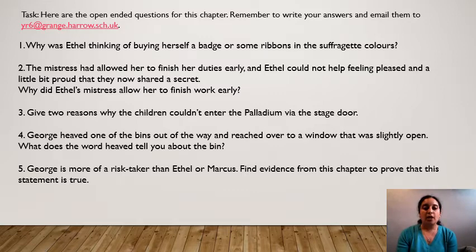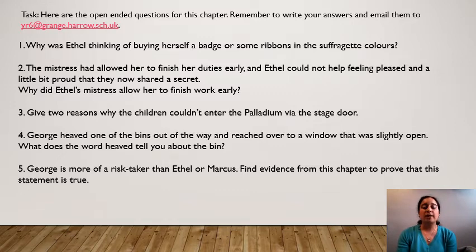If you can think of more than one answer for each question then put that in as well. Remember, as we've said, number five is always an opinion. In this case it's actually said for number five that you need to find evidence from the text — so it's really, really important that you do that for this chapter and for this question.